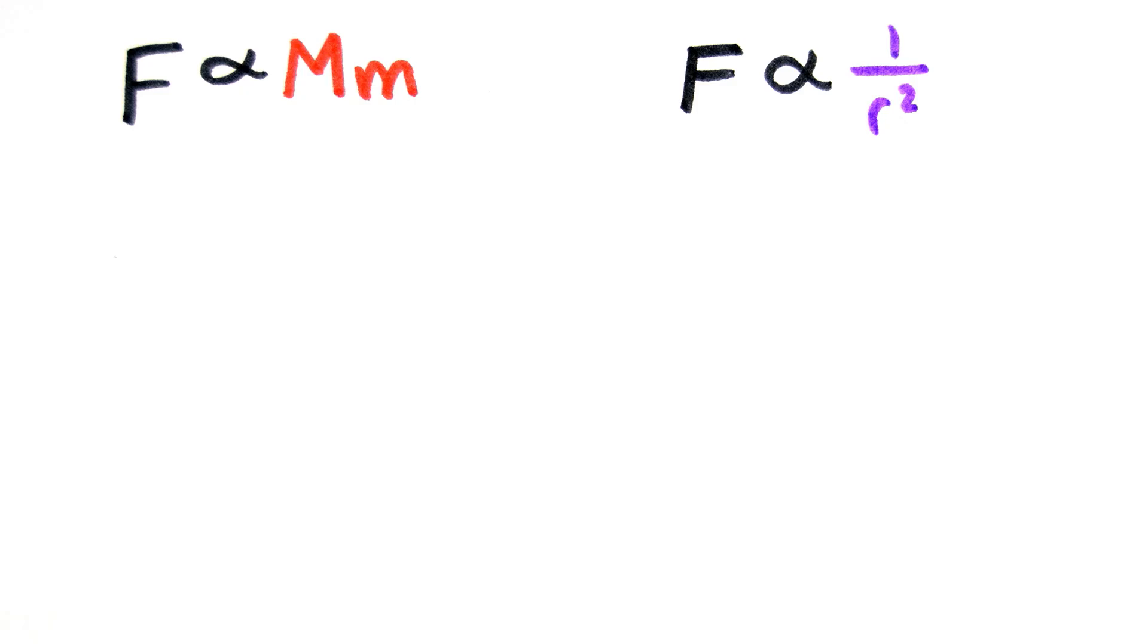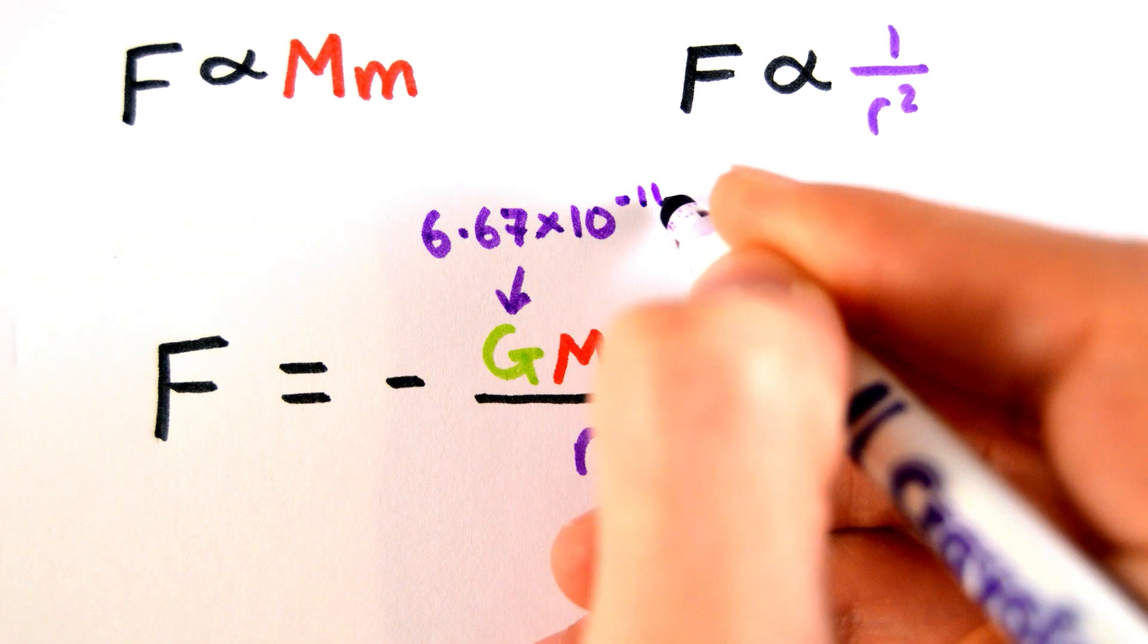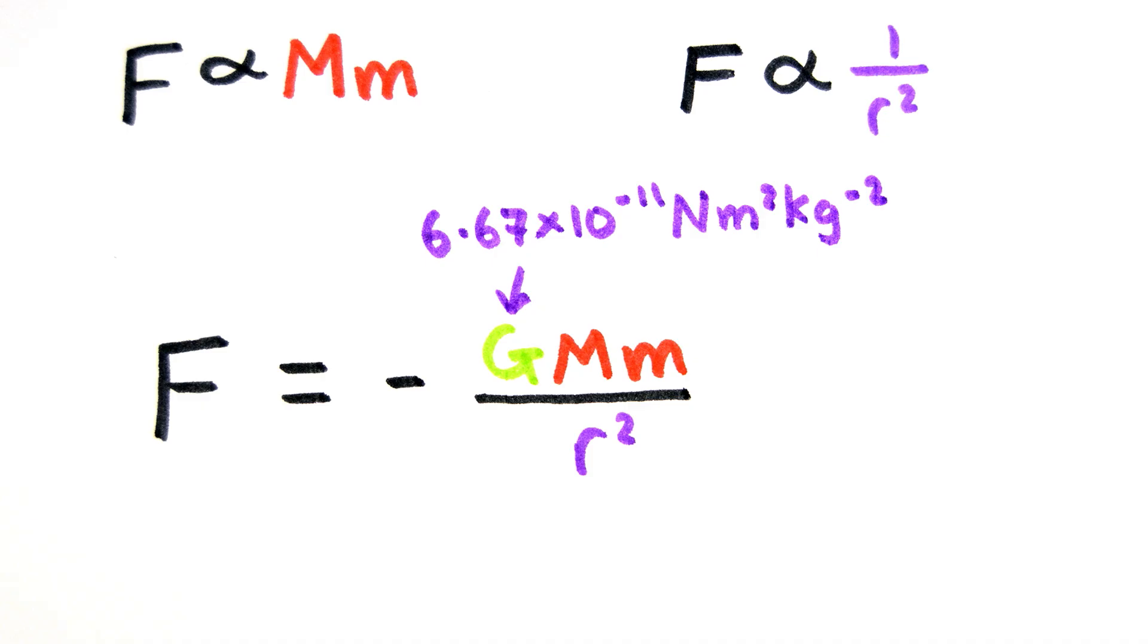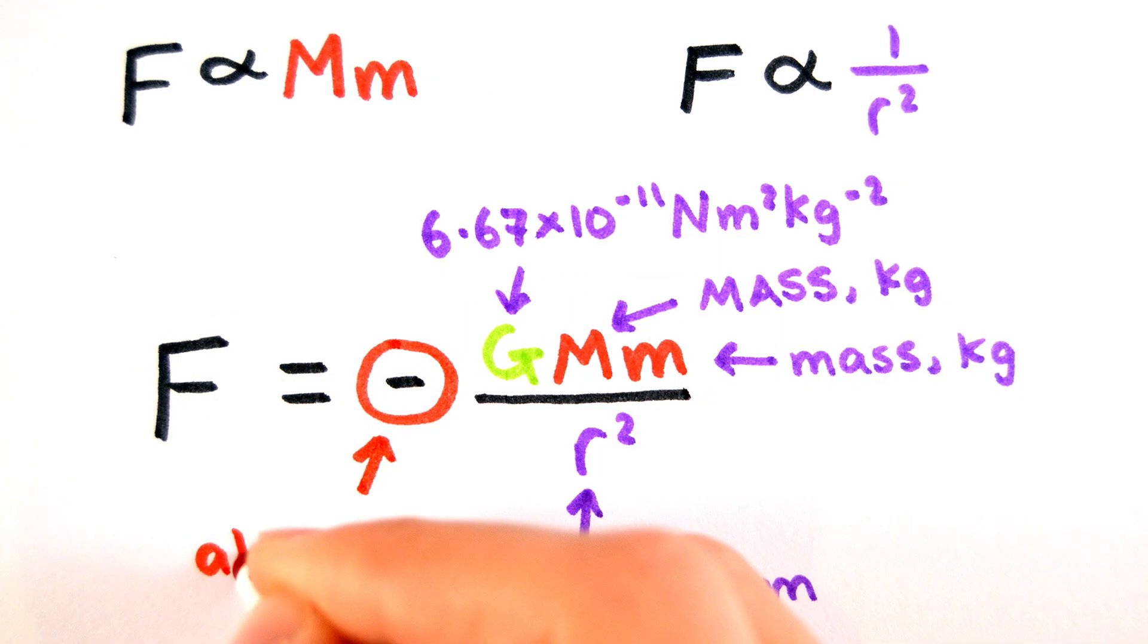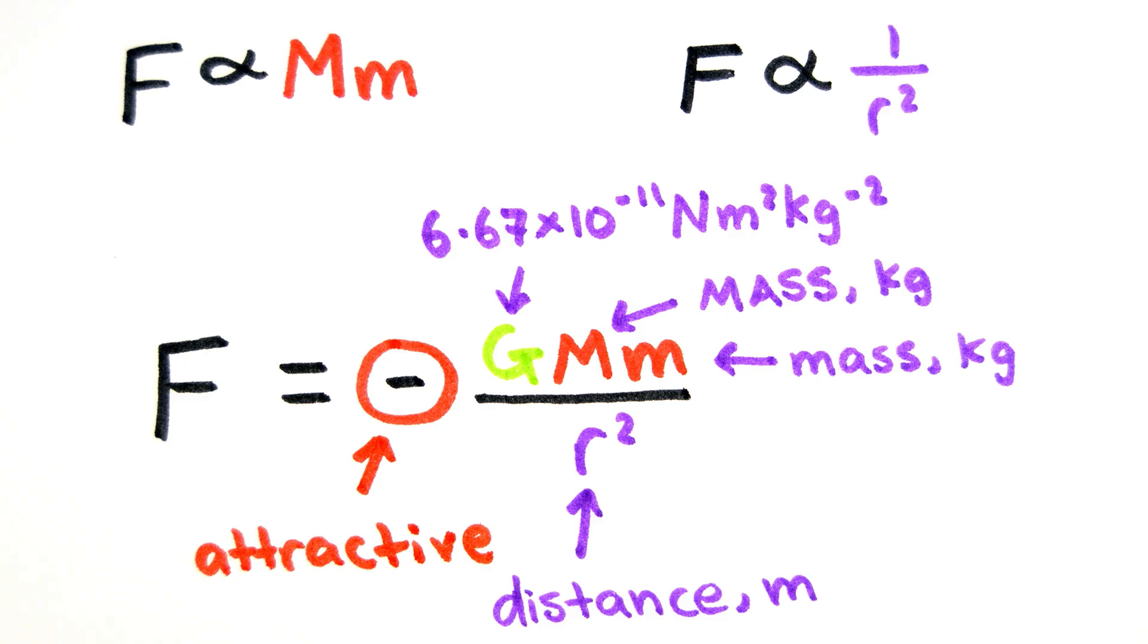This gives us the equation F equals minus GMm over r squared, where G is the universal gravitational constant of 6.67 times 10 to the minus 11, M is the mass of the larger body, m is the mass of the smaller body, and r is the distance between the centers of mass of the two bodies. The minus sign simply refers to the fact that the force is attractive.